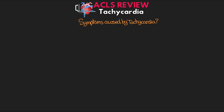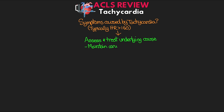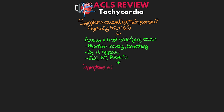We need to assess the necessity and appropriateness for treating their tachycardia. Typically, we're going to see this when our patient's heart rate is greater than 150. Our priority should be to assess for and treat any underlying causes while also maintaining the patient's airway and assisting their breathing if necessary, providing oxygen if they are hypoxic, and monitoring their ECG, blood pressure, and pulse oximetry. If the patient's tachycardia is persisting, then we need to ask if it's causing symptoms of decreased perfusion. If it is, then we need to act.